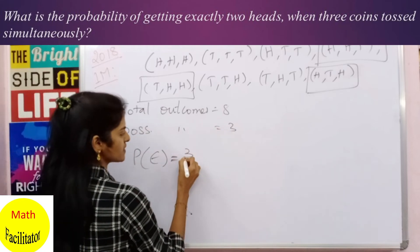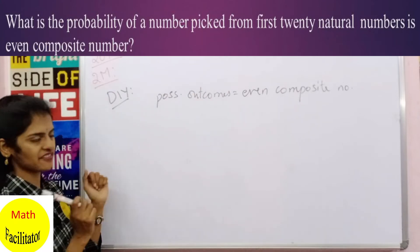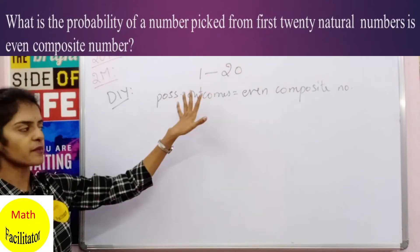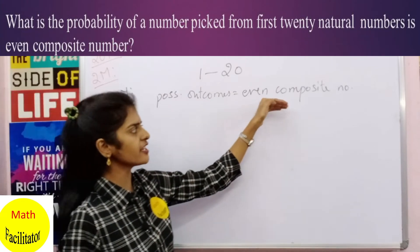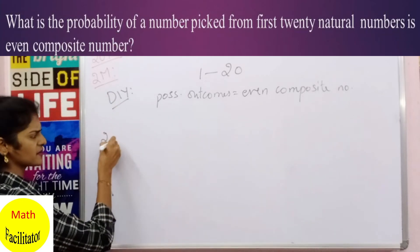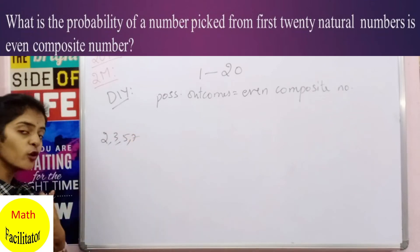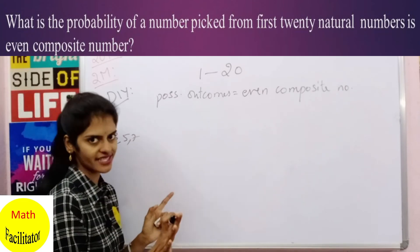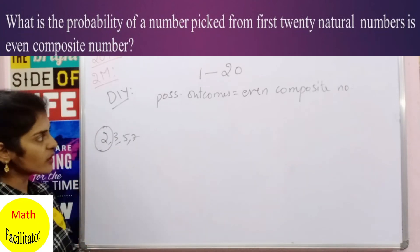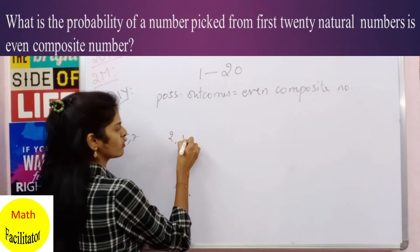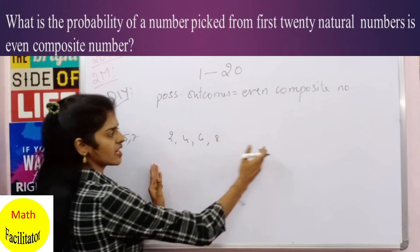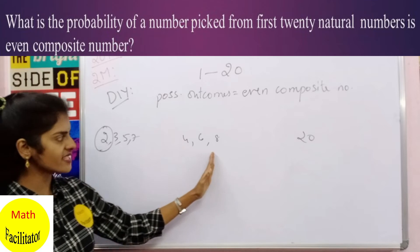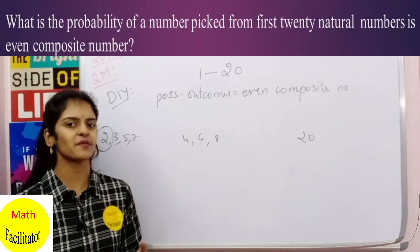Now it's DIY time. From the first 20 natural numbers (1 to 20), find the probability that a number is an even composite number. Prime numbers start from 2, 3, 5, 7... and 2 is the only even prime number. So even composite numbers from 1 to 20 are: 4, 6, 8, 10, 12, 14, 16, 18, 20 — eliminating 2 since it is prime. Count the possible outcomes and find the probability.